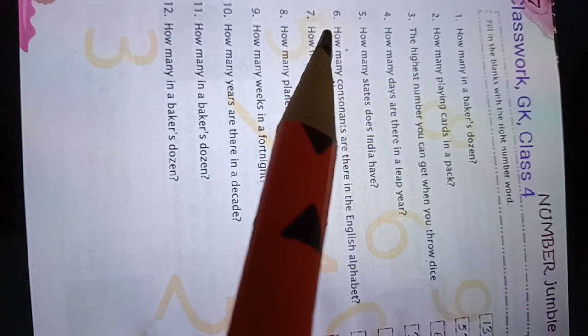Number five: how many states does India have? 28. Number six: how many consonants are there in English alphabet? 21.